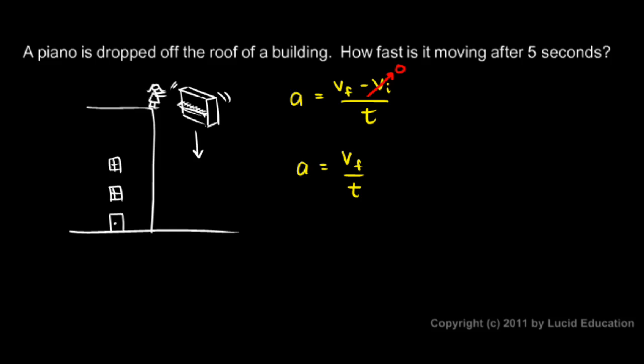And we want to know how fast it's moving after 5 seconds, so we want to know Vf. So we do the algebra here. We simply multiply both sides of the equation by t, and you remember the rule. We can do something like this as long as we do exactly the same thing to both sides. And this t that we put on the right, remember, can be thought of as t over 1. So it's really up in the numerator, so it cancels out with that one.